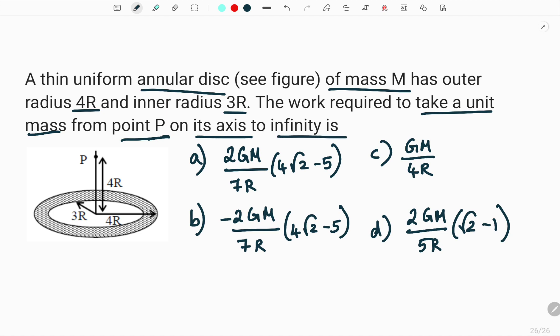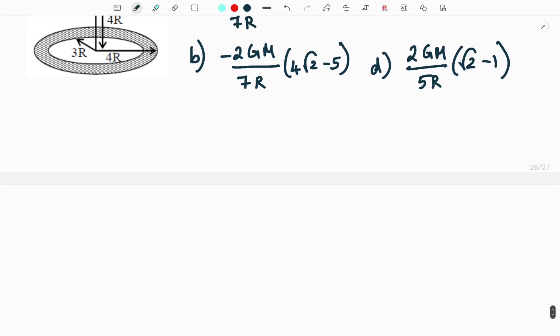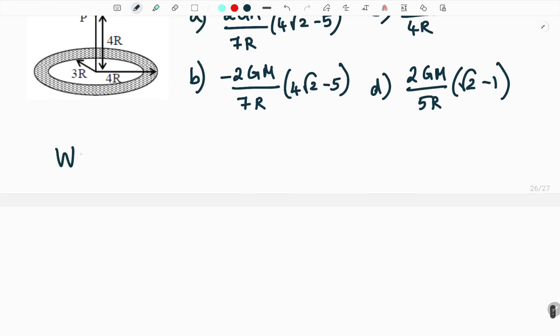Now the way to solve this question is just look at the work done here. They are asking the work done for a unit mass. So the work done for a unit mass will be the gravitational potential multiplied by the mass.